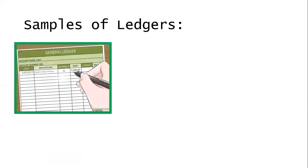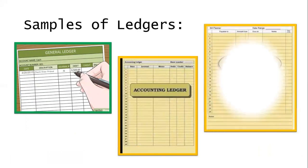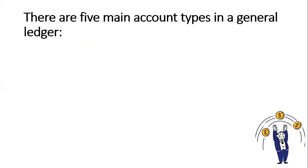Here are samples of ledgers — we have a general ledger, an accounting ledger, a bill planner, and an accounting ledger. That's how they look. This is just a basic knowledge of journalizing and posting transactions in business and distributive arts. There are five main account types in the general ledger.